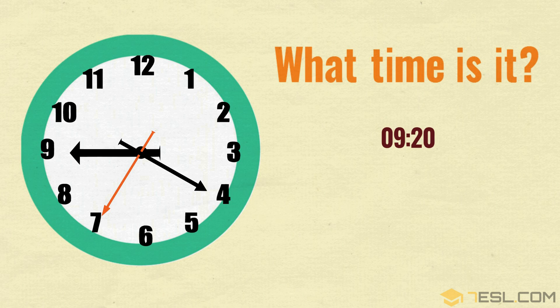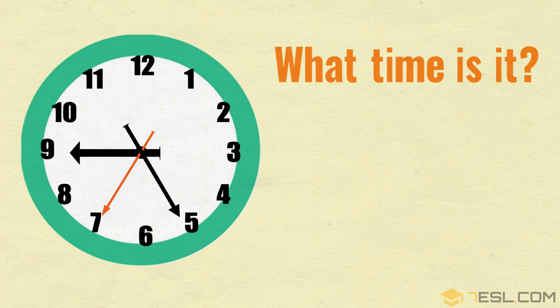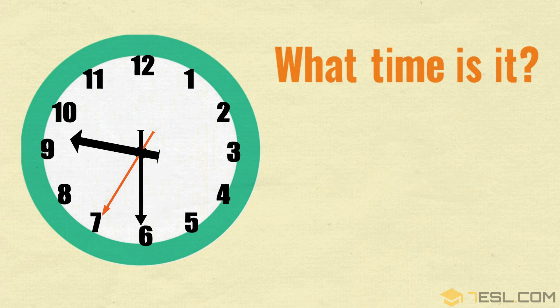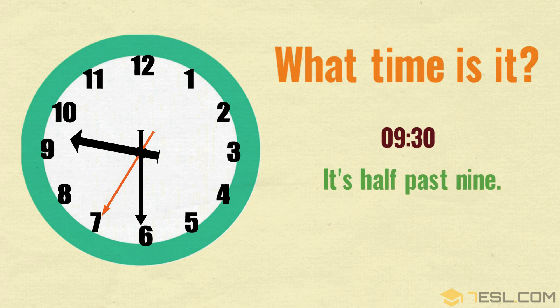9:20 — it's twenty past nine. 9:25 — it's twenty-five past nine. 9:30 — it's half past nine.